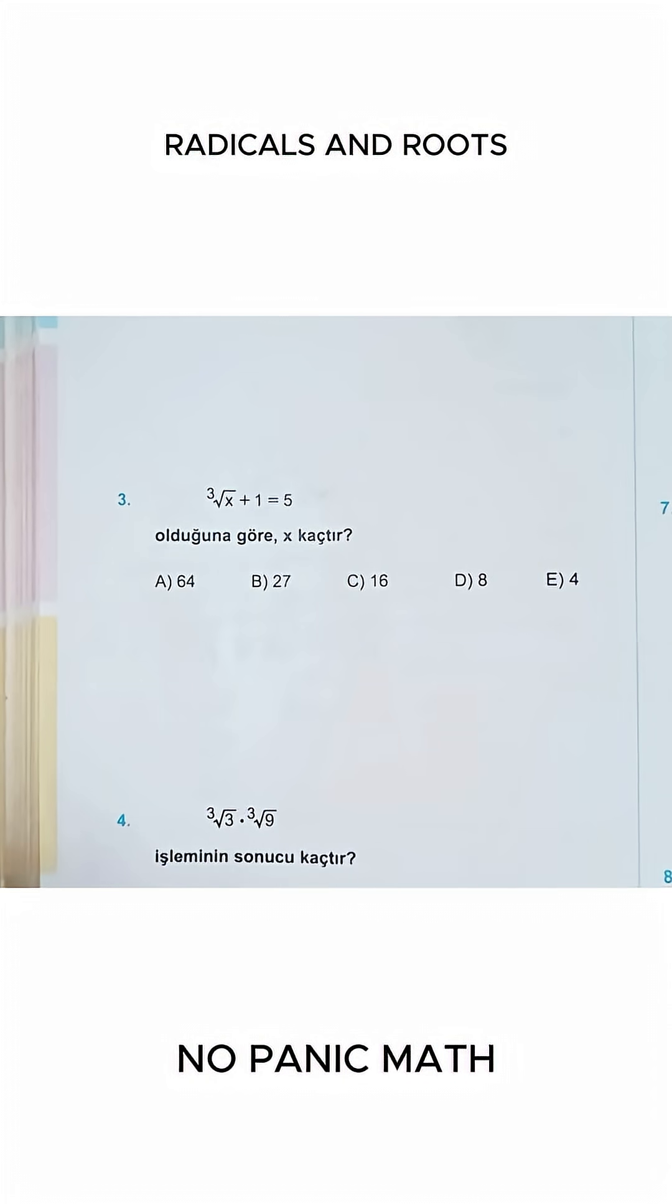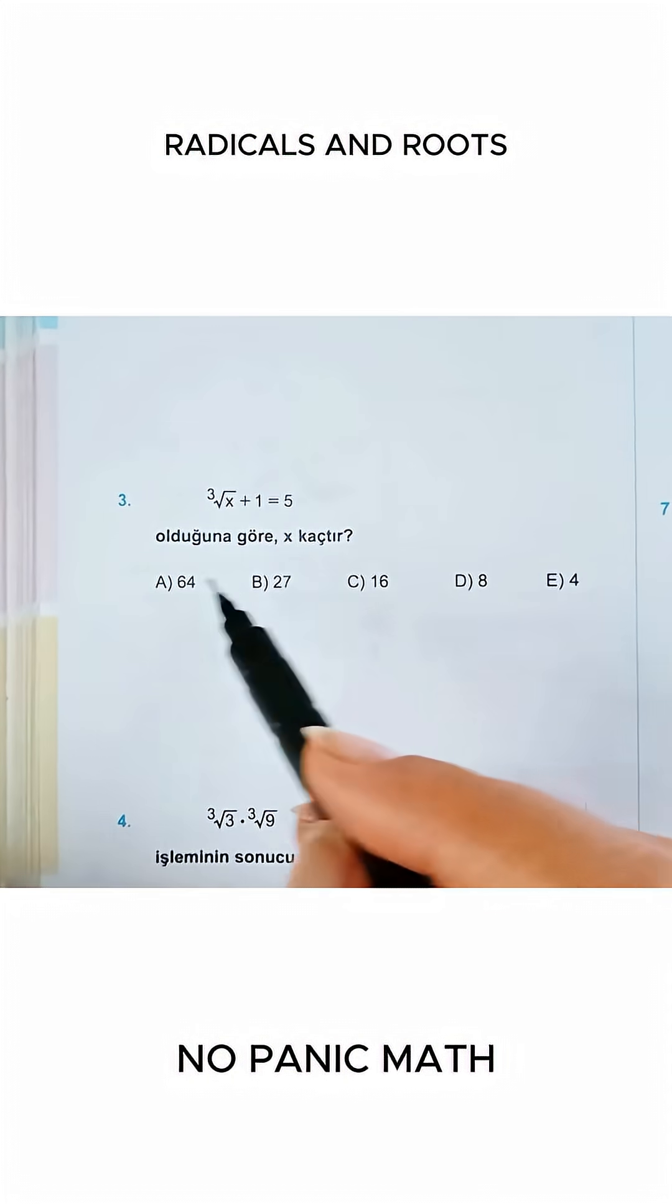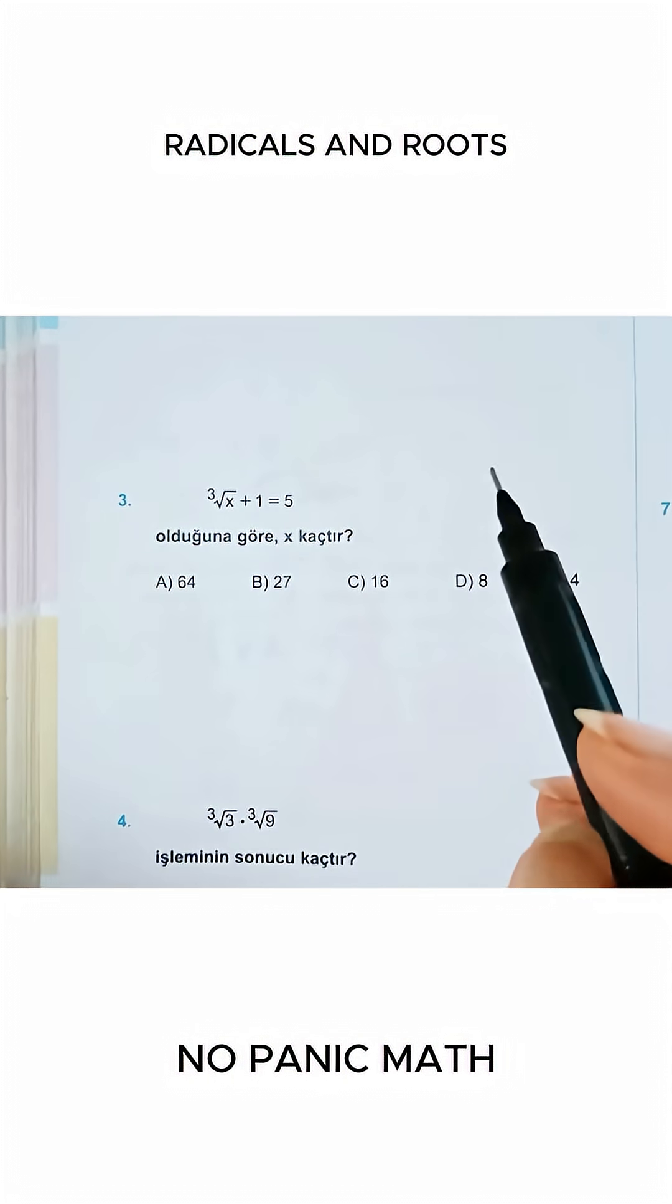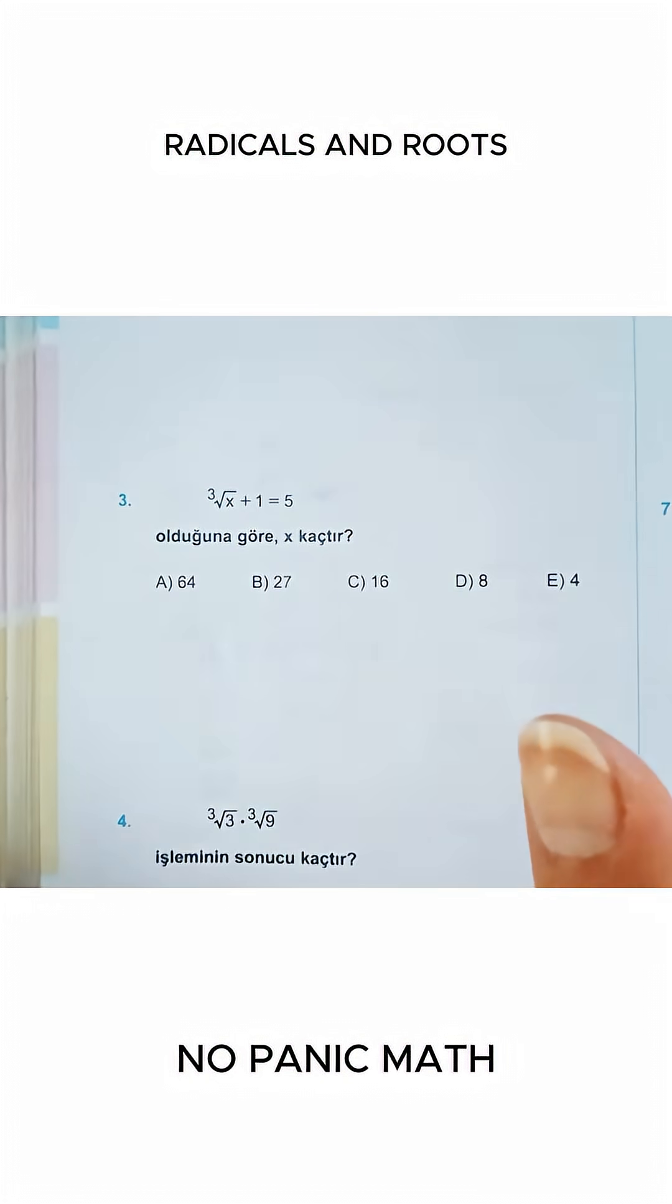We're going to pick another radical number question together. I specifically choose these questions because when the degree of the root changes, how do we get rid of the roots? Friends, I'll try to explain this to you as much as I can.